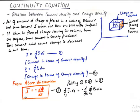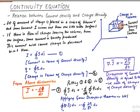And rest everything is simple putting the value of current in terms of current density here, and putting the value of charge in terms of charge density here. I get J dot dS to be equivalent to minus d by dt of rho V dV.